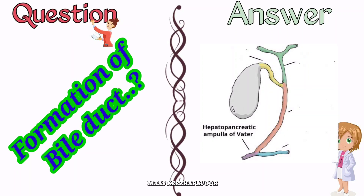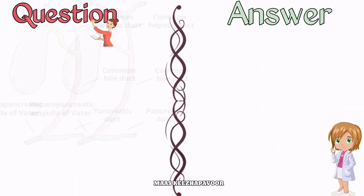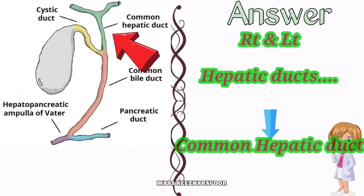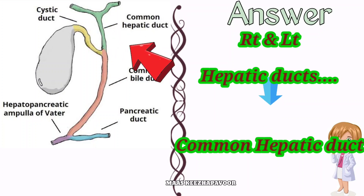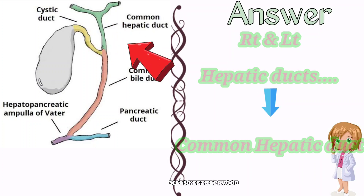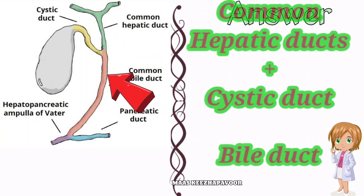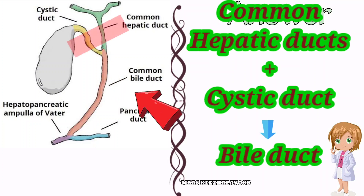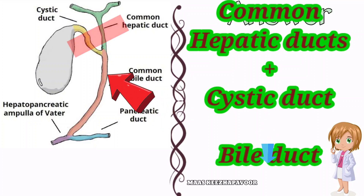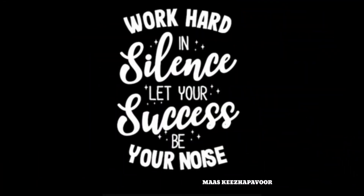How is the bile duct formed? The right and left hepatic ducts unite to form the common hepatic duct. The common hepatic duct joins with the cystic duct, which arises from the gallbladder, and together they form the bile duct.